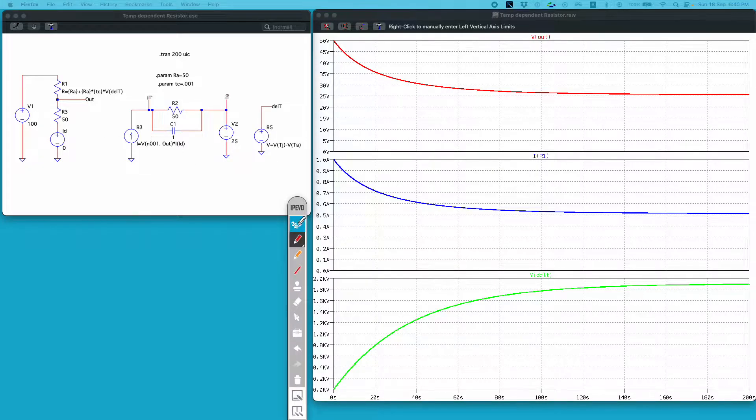Here on my screen I have created this voltage divider circuit in which I am using two resistors R1 and R3. R3 is kept constant at 50 ohm and R1 I am modeling as a temperature-dependent variable resistor.